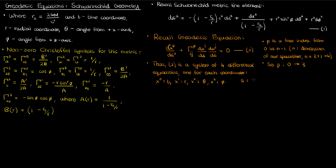The s in the geodesic equation is the arc length parameter. When you solve the geodesic equations, the function for each coordinate will be a function of the arc length along the geodesic curve. If we use some other parameter, the right-hand side of equation 2 becomes a nonzero term, giving a mathematically more cumbersome geodesic equation. Let's convert this arc length parameter into something more relatable in general relativity.